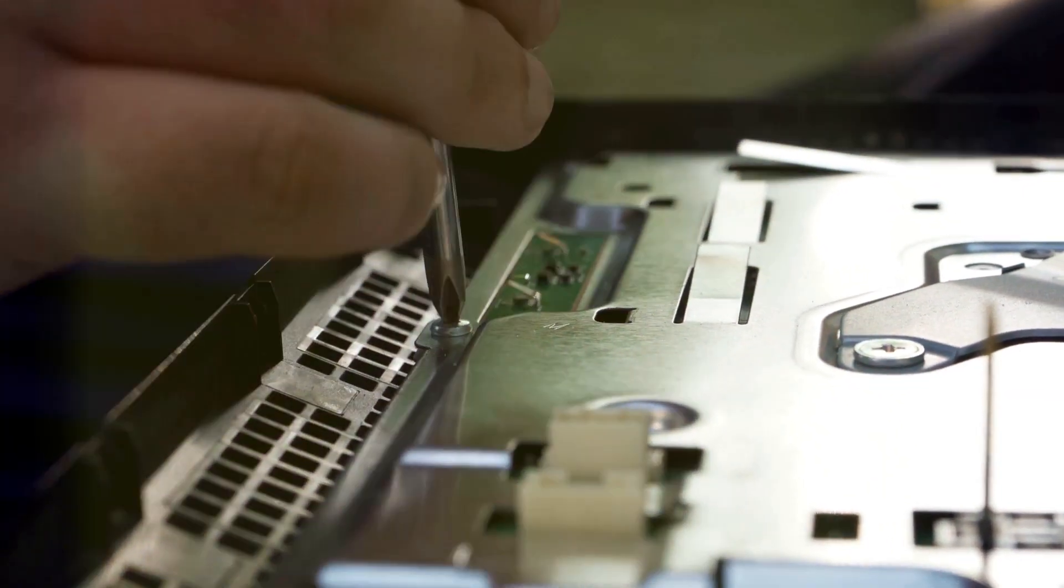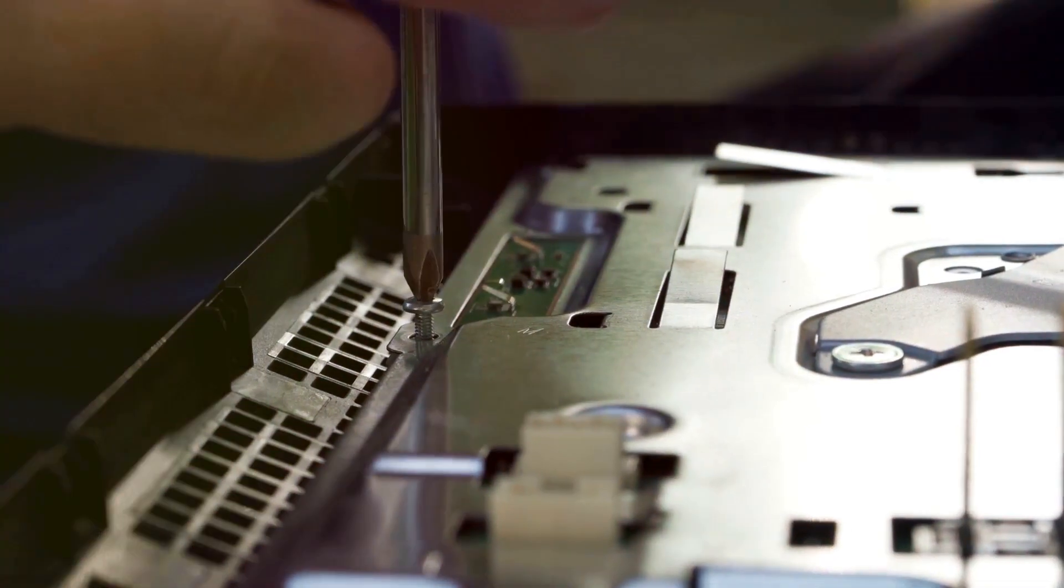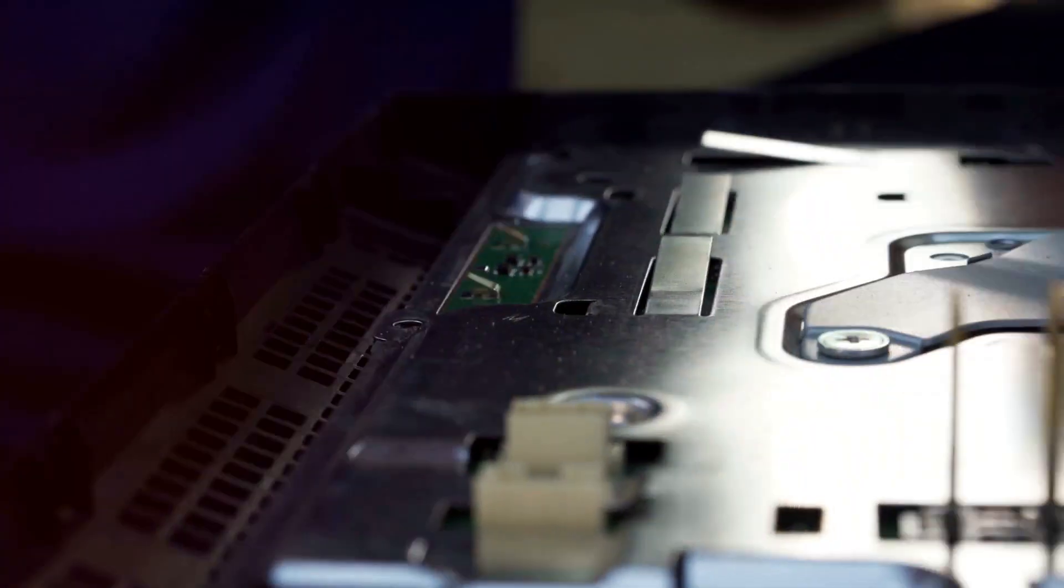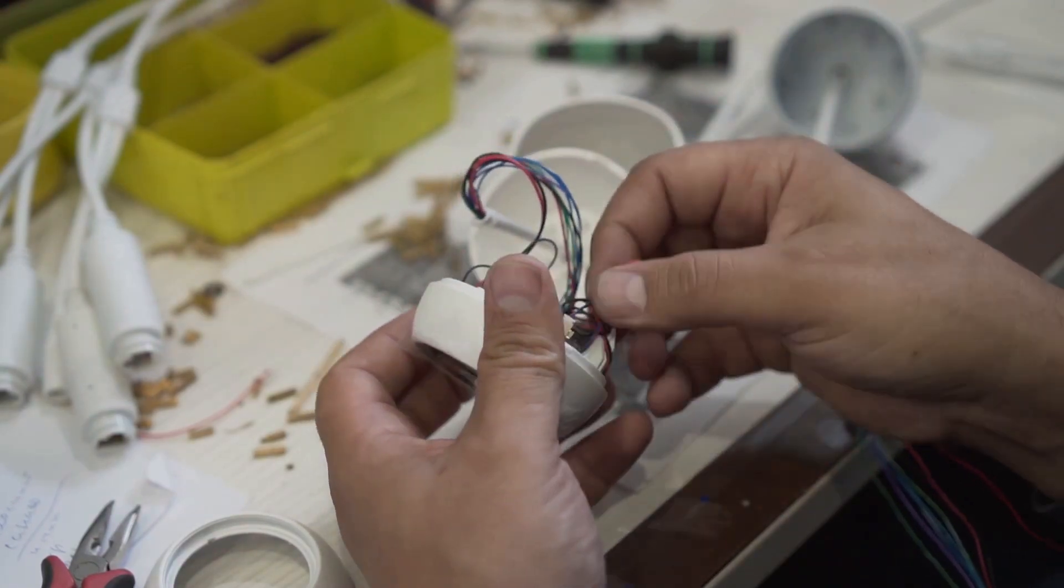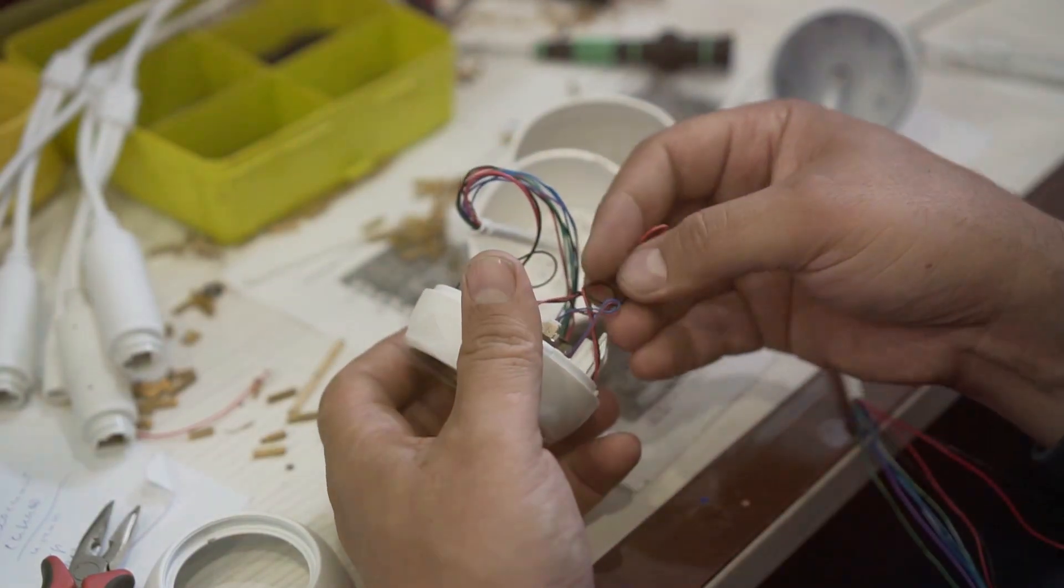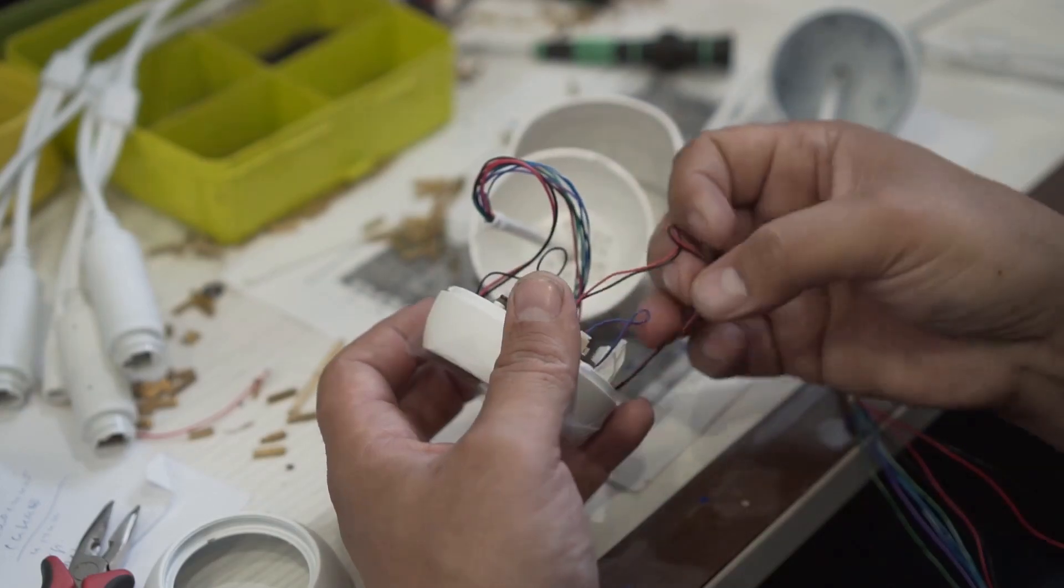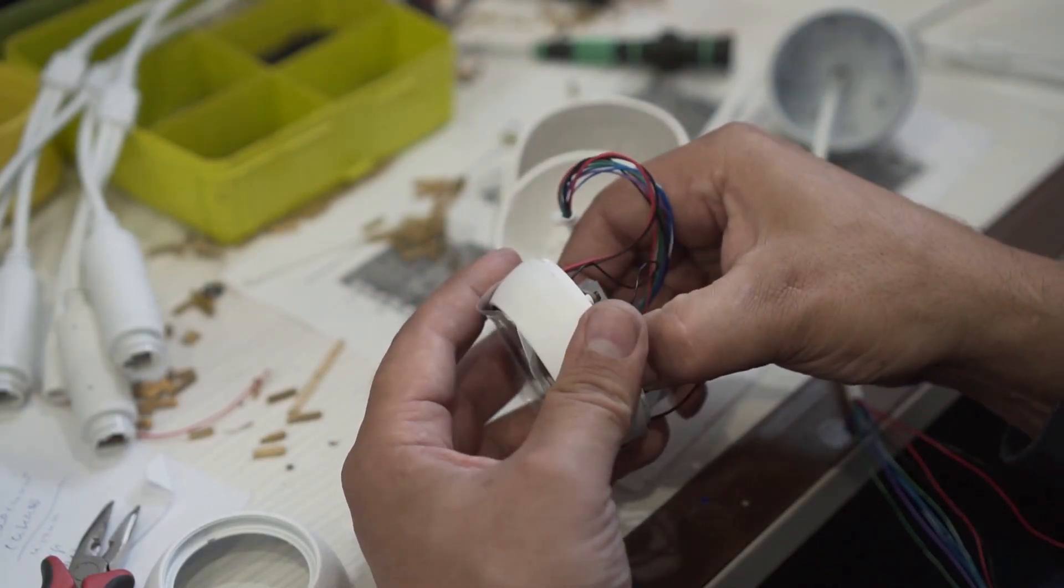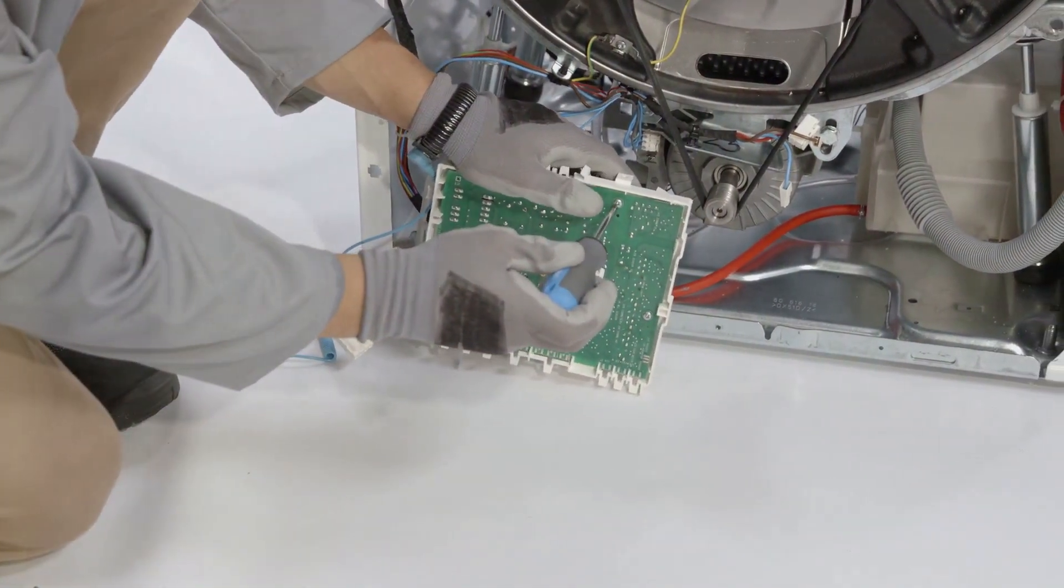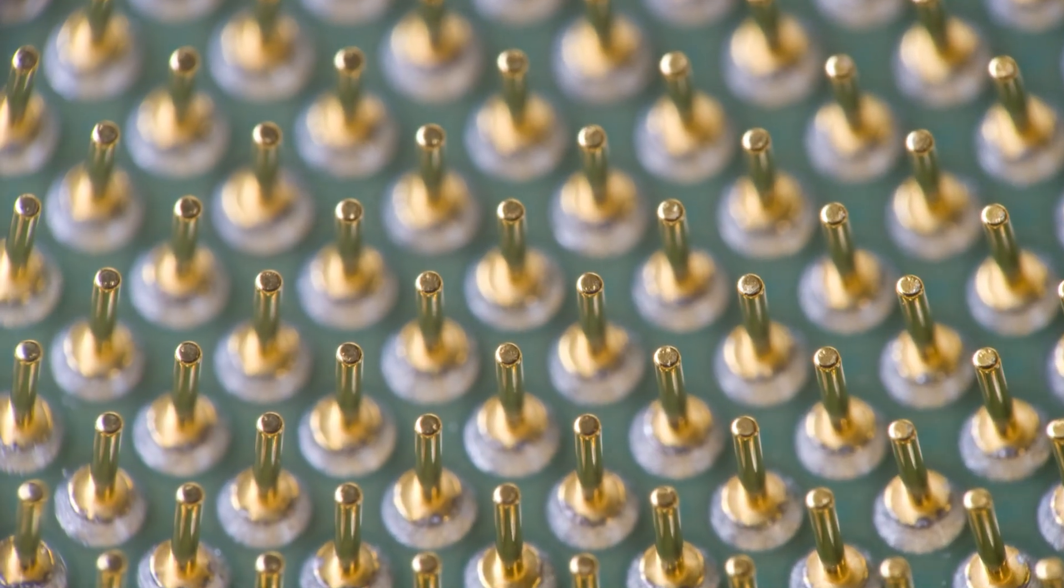You can use a screwdriver, pliers, or even just your hands for this. Remember to be gentle and avoid damaging the circuit boards themselves. Once you have the circuit boards exposed, focus on the gold-plated components. Look for gold connectors, pins, and contact points. These are the parts that contain the highest concentration of gold. You can use wire cutters to carefully snip off these gold-plated components and collect them in a separate container.